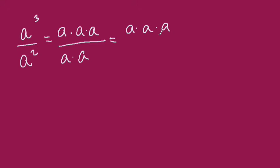If you have a to the 3rd power over a to the 2nd, this means you have a times a times a in the numerator and a times a in the denominator. Splitting this up won't change the answer here, but I'm just rewriting this a little bit.